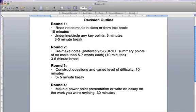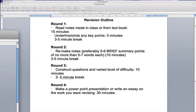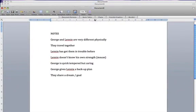Then you come back to your work and what you want to do is remake your notes, and preferably these are going to be five to six brief summary points of no more than five to seven words each. So obviously you're going to think about them and write them depending on how many there are. So again for my example here, I've actually already done them. So the notes I'm going to make on that: George and Lenny are very physically different. They travel together. Lenny has got them in trouble before. Lenny doesn't know his own strength. George is quick-tempered but caring. George gives Lenny a backup plan and they share a dream or goal. So there's just the little notes that I'm making on that. Obviously that might take you less than ten minutes but you do want to think about getting the best ones that you can.